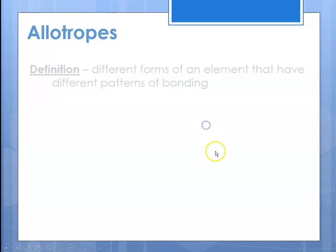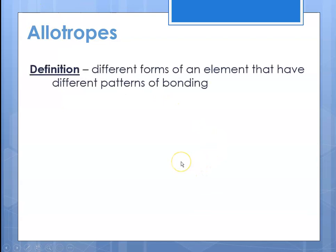So that leads us to a discussion of allotropes, and the definition of allotropes are different forms of an element that have different patterns of their bonding. There are several elements that have allotropes, but we only talk about carbon, and carbon has three known allotropes.